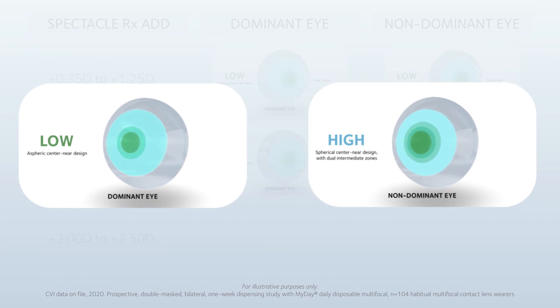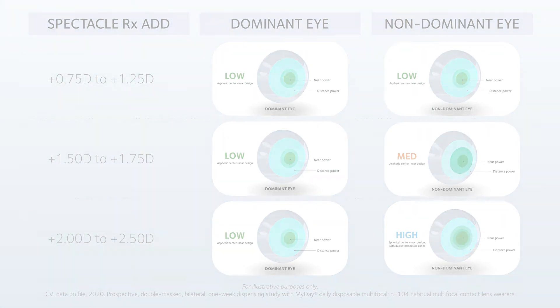For later stage presbyopes, the system combines the wide, clear distance vision of the low-add with a high-add lens designed with a single-powered spherical centre-near zone and dual intermediate power zones for those wearers who need the most help with their near vision.